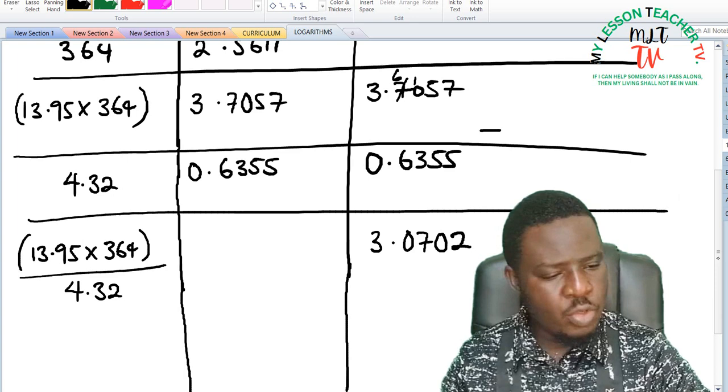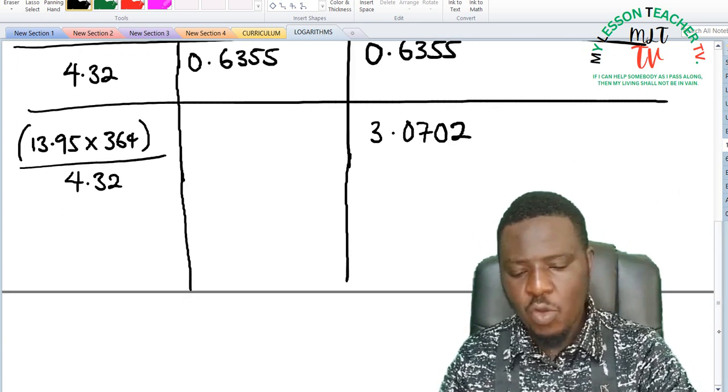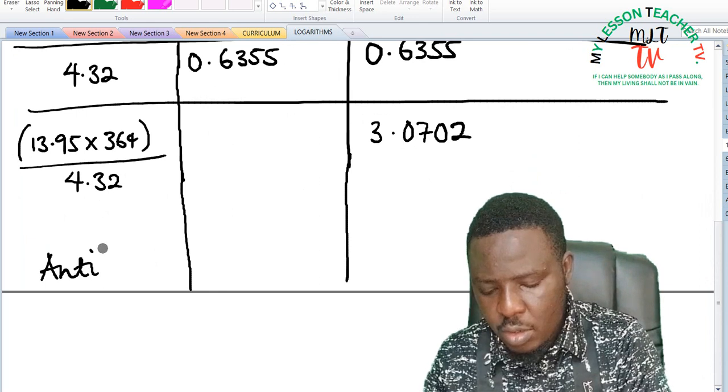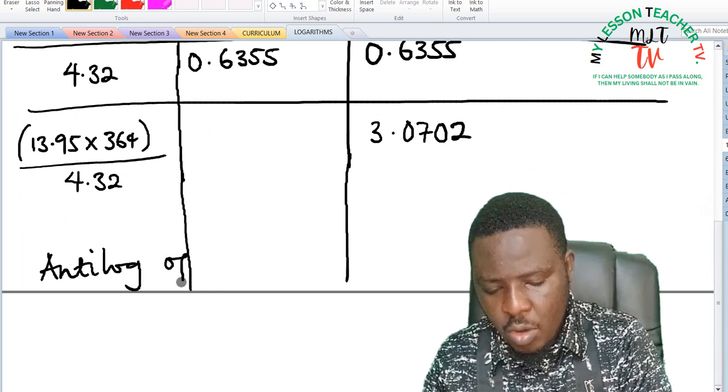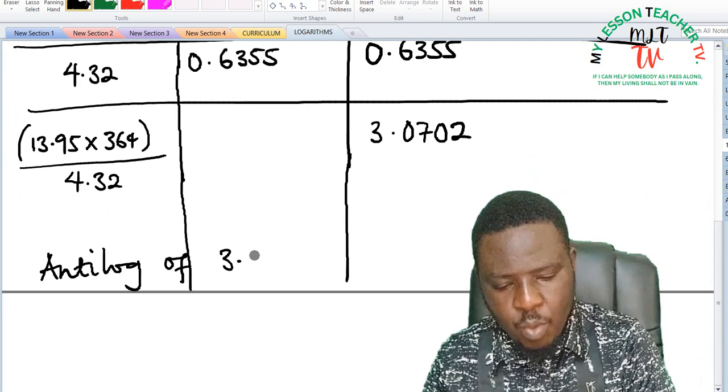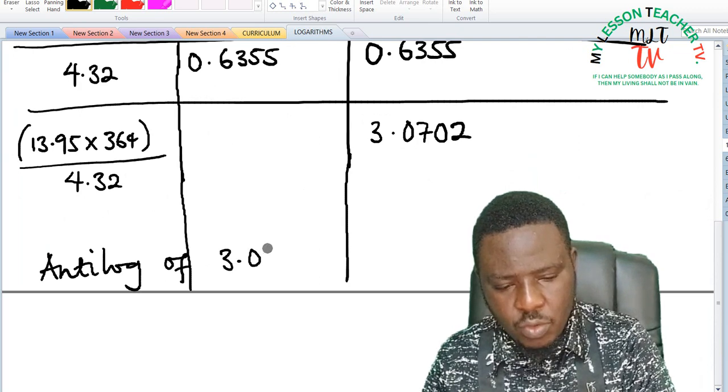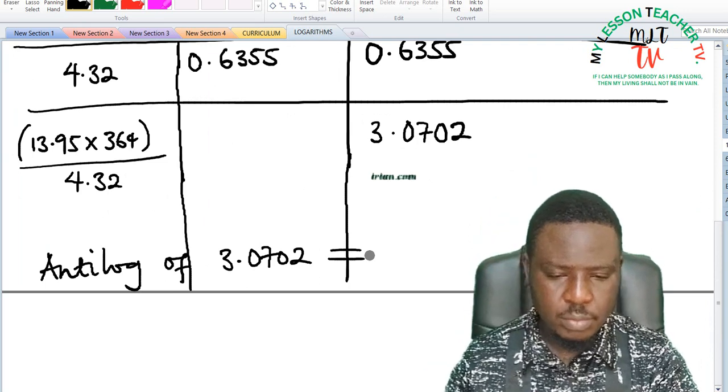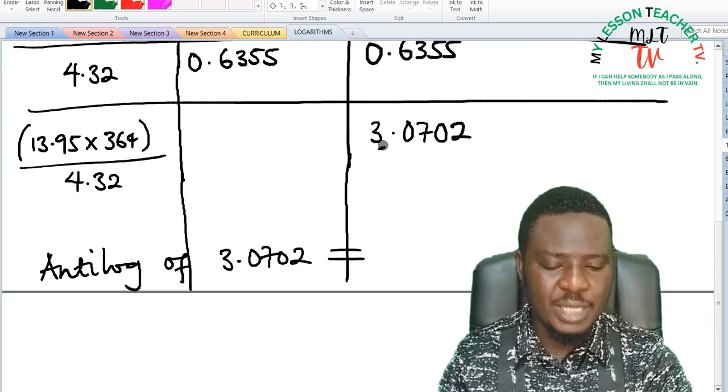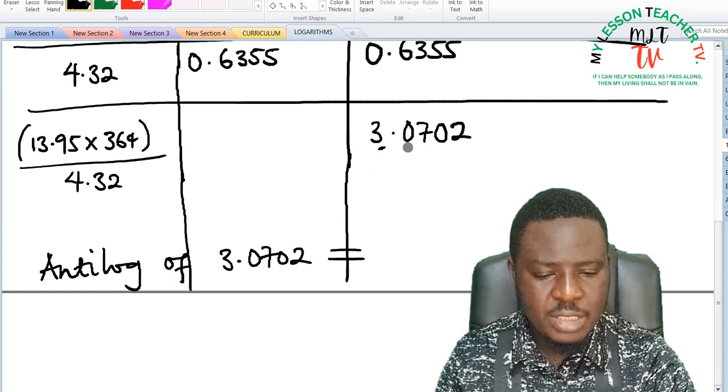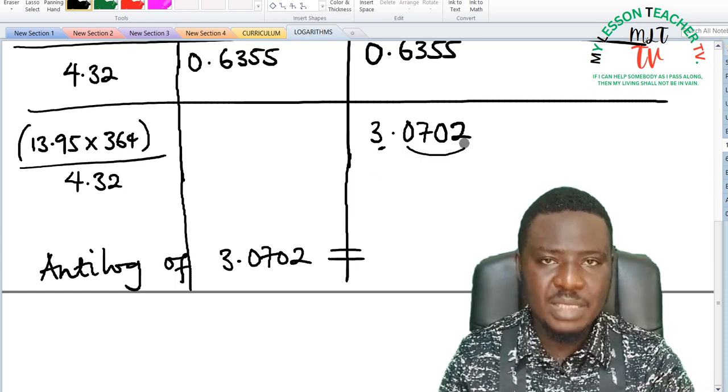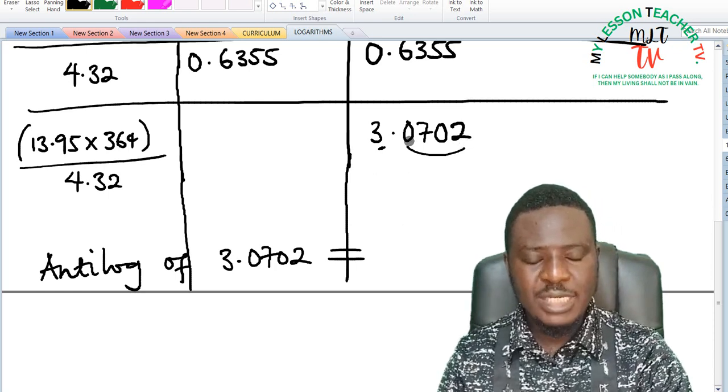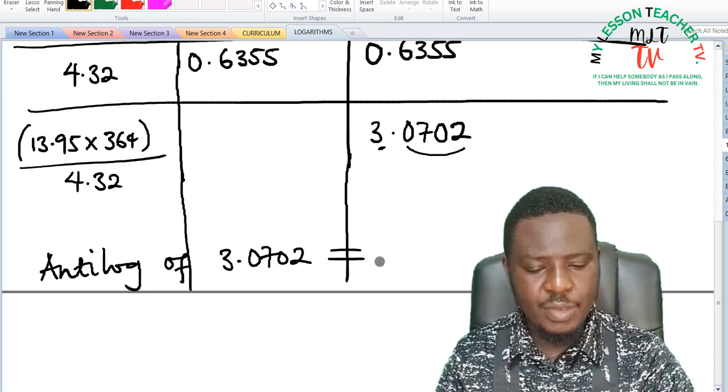We then use the anti-log to get the value of this. So we would now look at anti-log of 3.0702 will be equal to this. Remember this is said to be the characteristics, while this is gotten from the mantissa, so we are going to use the anti-log to determine the mantissa.